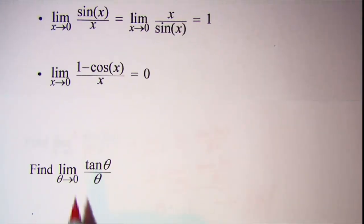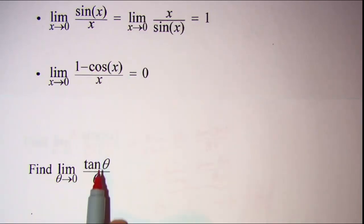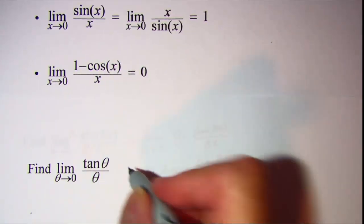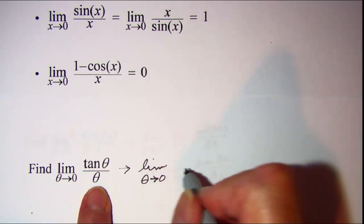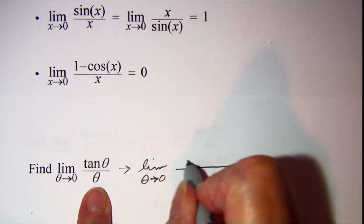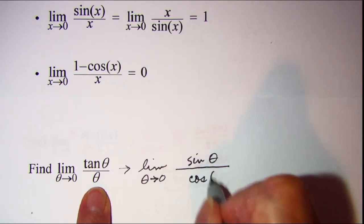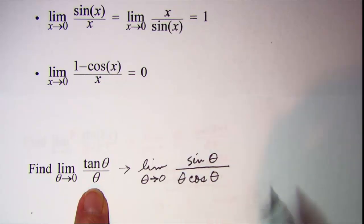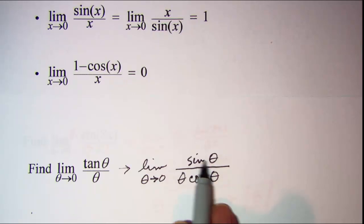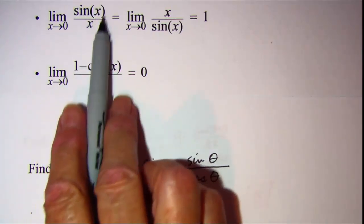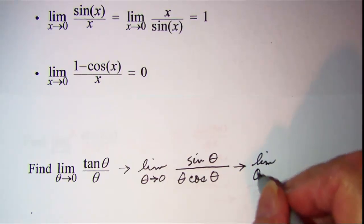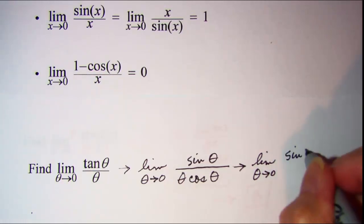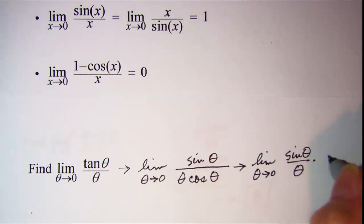For this problem, tangent theta is not directly in our theorems, but tangent is the same as sine divided by cosine. So I'll rewrite this as the limit as theta approaches 0 of sine theta over cosine theta, with theta as a factor in the denominator. Now I have sine theta in the numerator, so I can apply the first theorem and simplify to the limit of sine theta over theta times 1 over cosine theta.